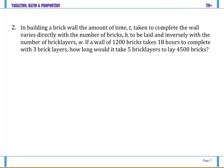Another one. In building a brick wall the amount of time t taken to complete the wall varies directly with the number of bricks b to be laid and inversely with the number of brick layers which is w. So combining that I have t equals k b all over w.